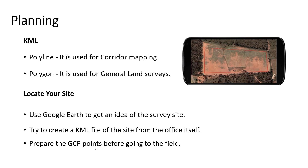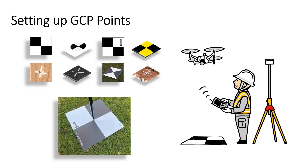You can also prepare the GCP points before going to the field to save time. The next step in the planning phase after KML creation is to set up the GCP points. GCPs are defined as points on the surface of the earth which help to georeference raster data such as satellite, aerial, or drone imagery. They normally look like a checkerboard and are marked on the ground in black and white color, as it is easy to spot from high altitudes. They are also marked with numbers so that it is easy to identify them.